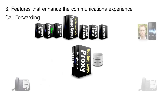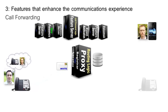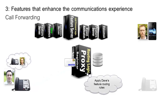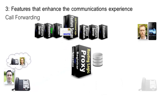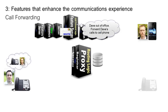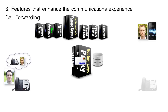For call forwarding, an invite arrives at the proxy. The proxy checks the routing rules and routes the invite to the call forwarding feature server, which, after applying its logic and checking my profile, modifies the destination address inside the SIP message and routes the call downstream to the cell phone. With separate feature servers, different combinations and sequences of applications can be applied for each user without a dependency on the proxy vendor to supply them.